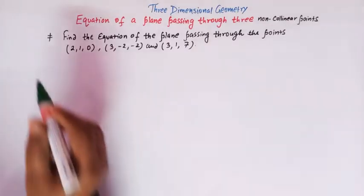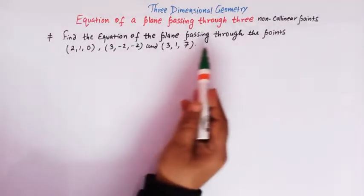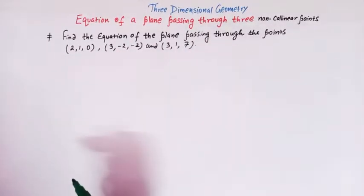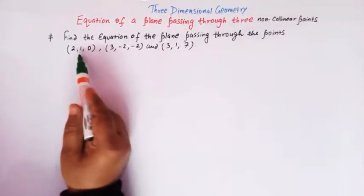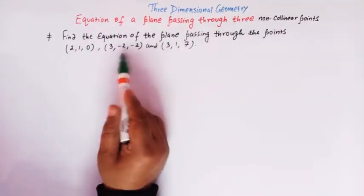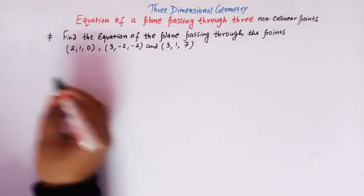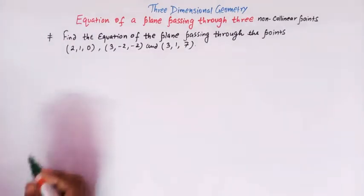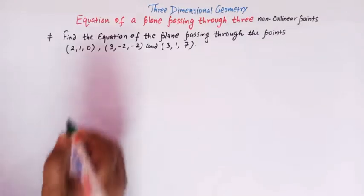So here we have a problem: find the equation of the plane passing through these three non-collinear points. Before solving this problem, let us consider the case of collinear points.